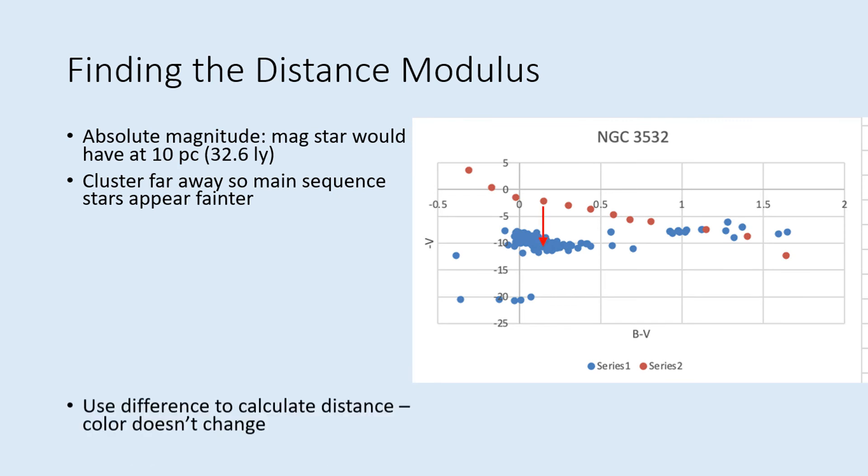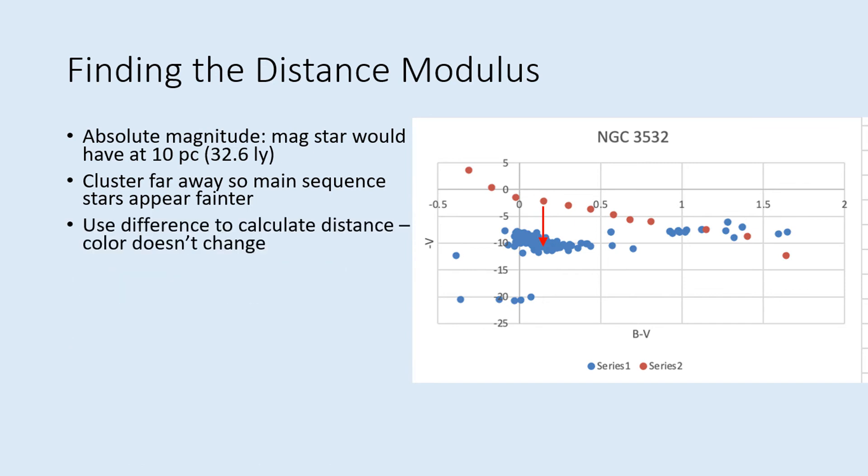We can use this difference in magnitudes to calculate how far away the cluster is. One thing that helps with this is that even though a more distant star will be fainter than a closer one, the color doesn't change with distance. That means that stars in the cluster have the same colors as the absolute magnitude points directly above them.